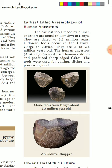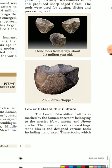The human ancestors used hammer stones and produced sharp-edged flakes. These tools were used for cutting, slicing, and processing food.